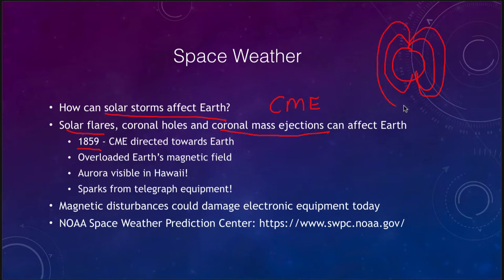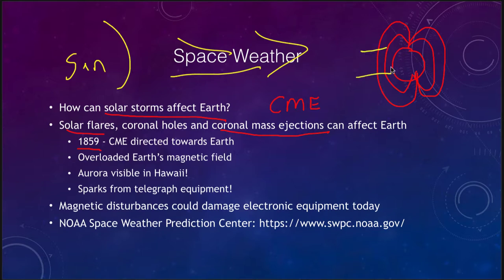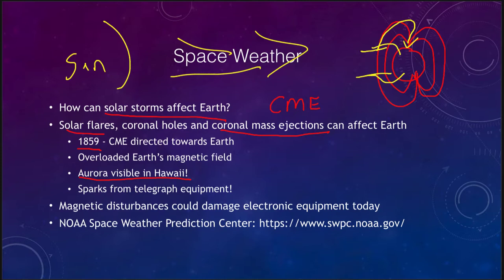The Earth's magnetic field shields us, but when you have a very intense burst of particles coming from the sun towards the Earth, they can deform the Earth's magnetic field. Instead of particles traveling up around to the north pole to strike the atmosphere, they can actually hit at much lower latitudes. During the 1859 event, auroras were visible in Hawaii — places close to the equator where you normally don't see them. The intense activity also caused sparks from the telegraph equipment, generating currents within the telegraph wires and causing small fires to occur.